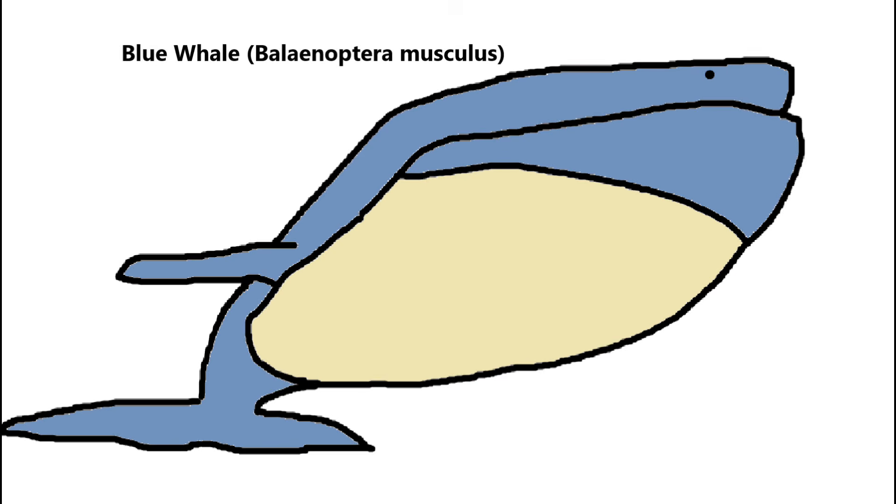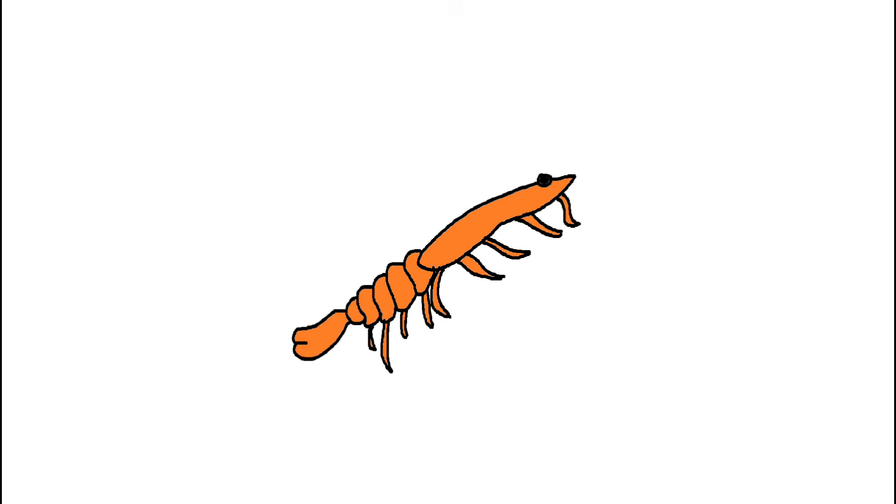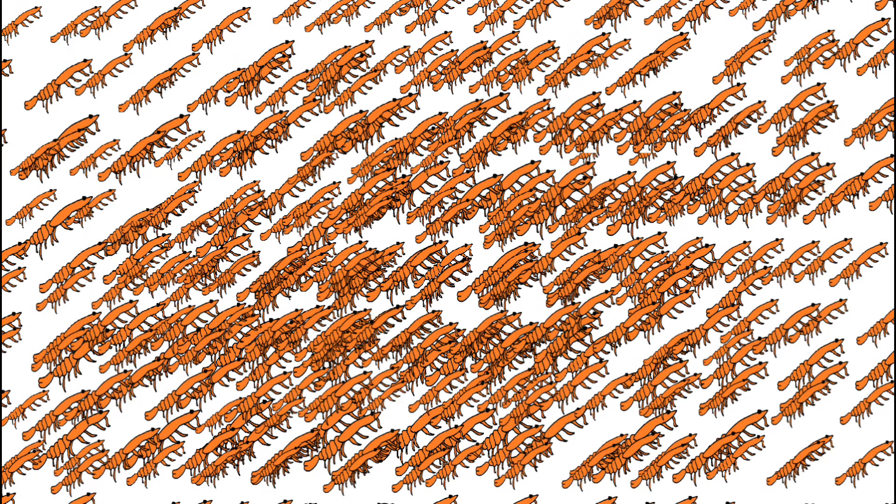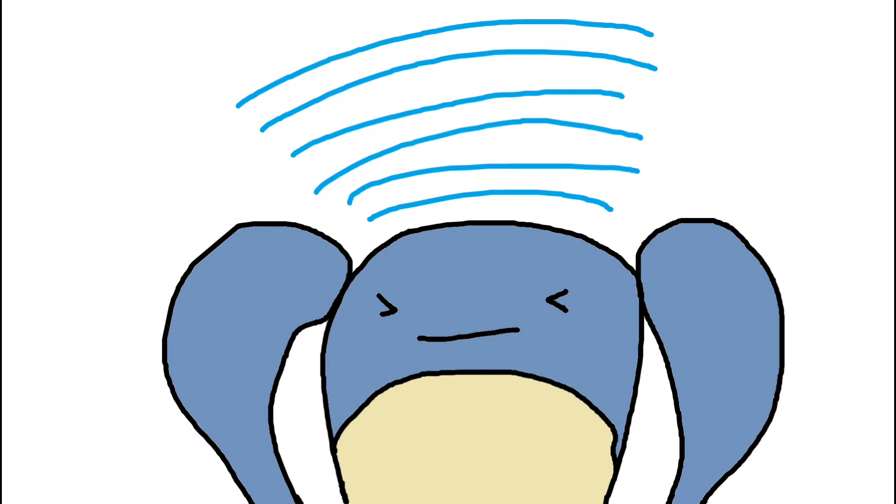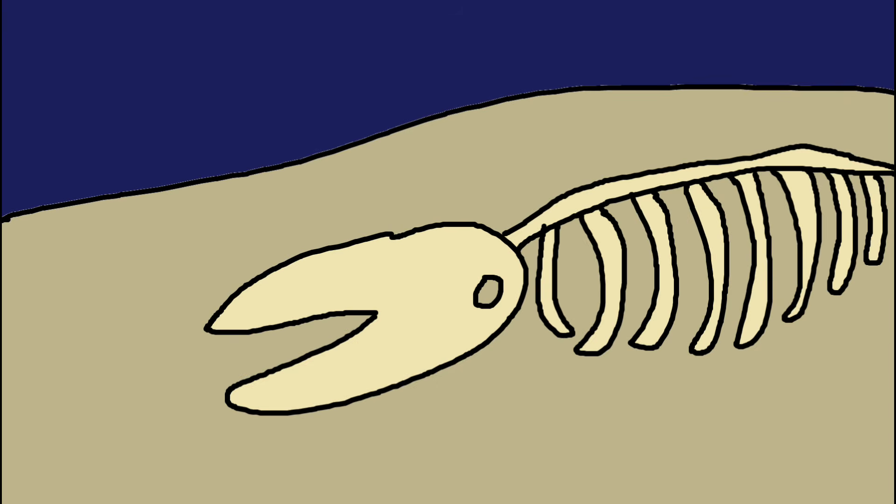Finally, we have the blue whale, the largest animal to ever exist. It still roams the earth's oceans today. Measuring up to 100 feet in length and weighing as much as 200 tons, it dwarfs all other creatures. This gentle giant feeds on krill, consuming several tons each day using its baleen plates. Blue whales also communicate using low frequency calls that travel across vast ocean distances. Despite their immense size, blue whales are endangered due to human activities, reminding us of the fragility of even the mightiest species.